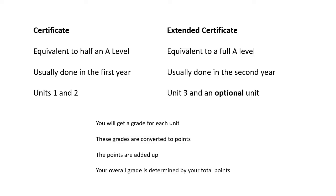The extended certificate is equivalent to a full A level. It's usually done in the second year. So you do certificate in the first year, extended certificate in the second year. And you have to do unit three and then you do an optional unit. Probably not one that you choose, but one that your teacher chooses, depending on what kind of specialist they are. If they're a biology teacher, it'll be a biology one. If they're a physics teacher like me, it'll be one of the physics ones because I'll do a good job of it.